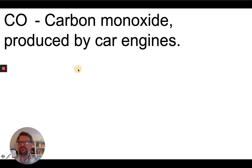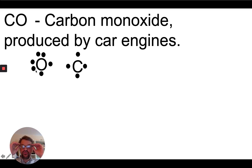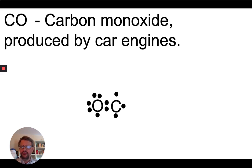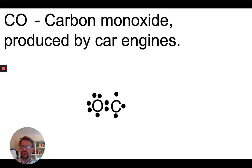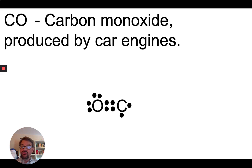CO — carbon monoxide — is produced by car engines and has one oxygen and one carbon. Oxygen again has six valence electrons; carbon has four. Starting by placing them next to each other, we have a single bond with two electrons being shared. The issue again is the octet: oxygen right now only has seven electrons, and carbon only has five. So we take two of our electrons and put them in the space between the oxygen and the carbon. We're not adding extra electrons — just moving electrons that are already there so that they're between the two atoms.